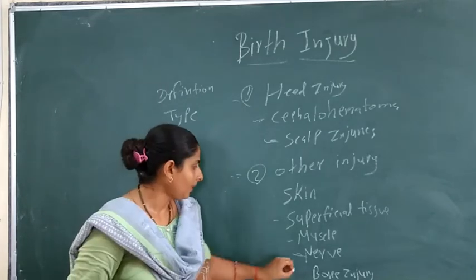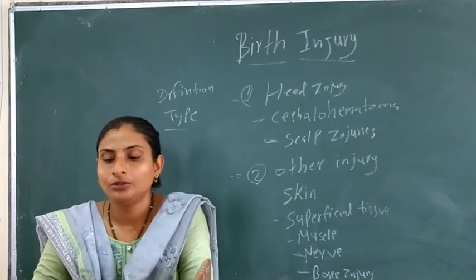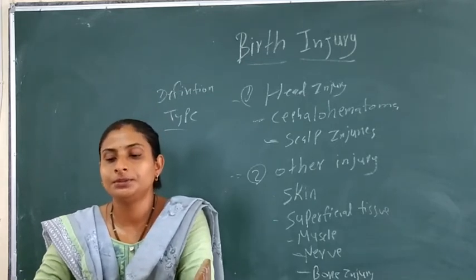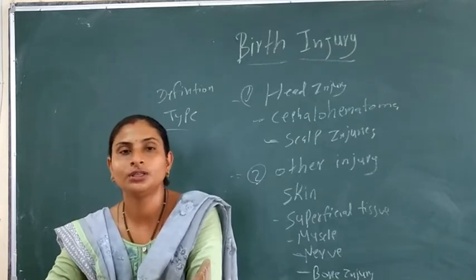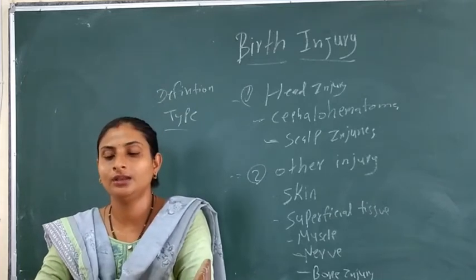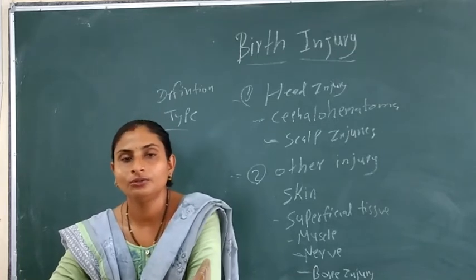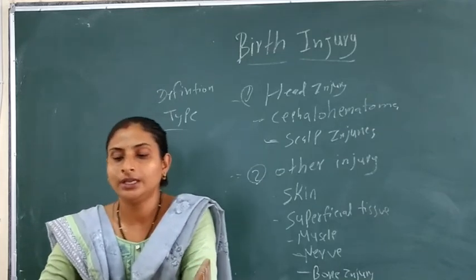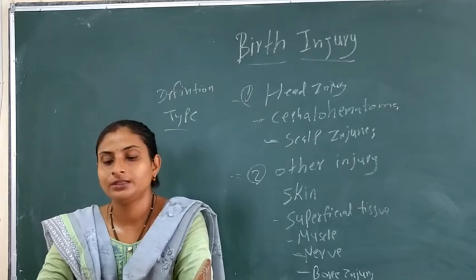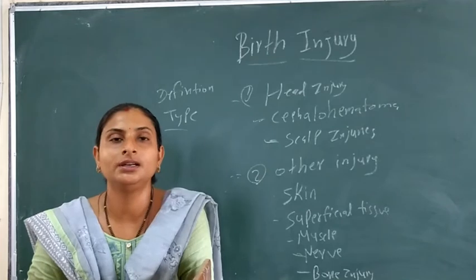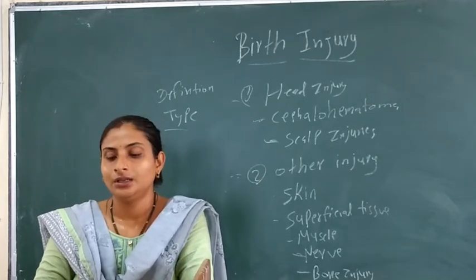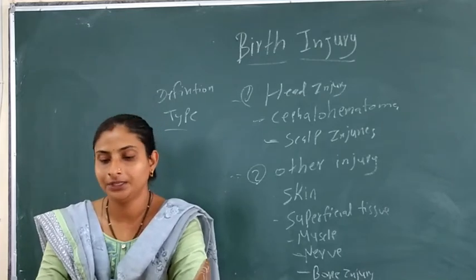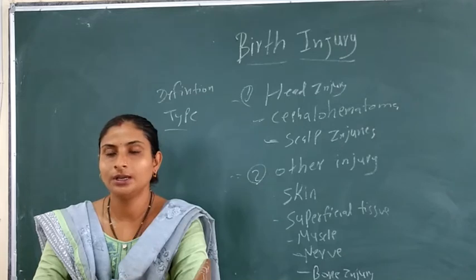Bone injuries include fractures of the clavicle and humerus. Clavicle fracture occurs in breech presentation or shoulder dystocia. Signs and symptoms: crepitus at the fracture site and dislocation of the joint. Humerus fracture occurs in breech with extended arm presentation. The baby will not move the affected arm and cries when the bone is touched.